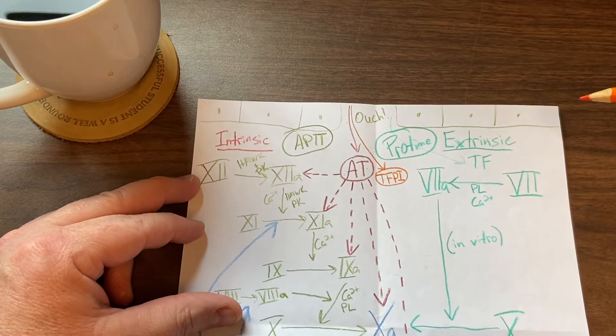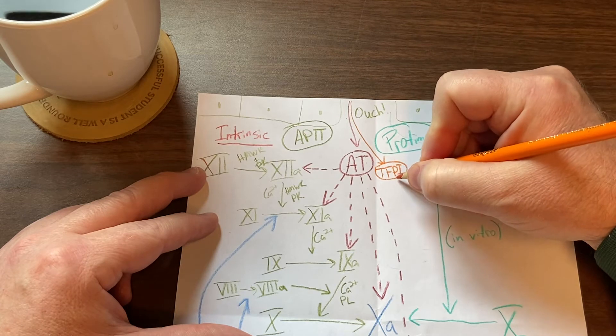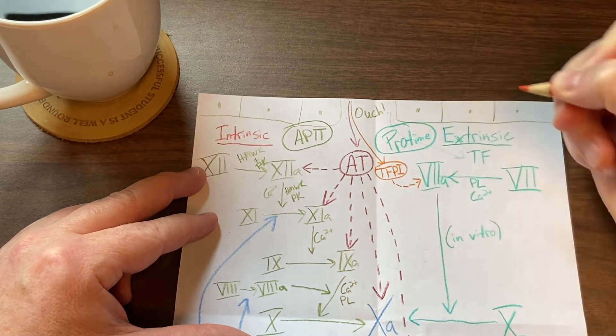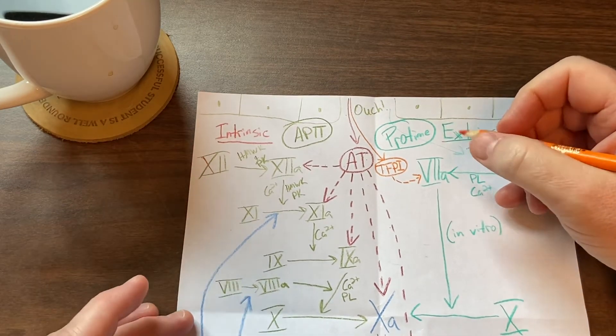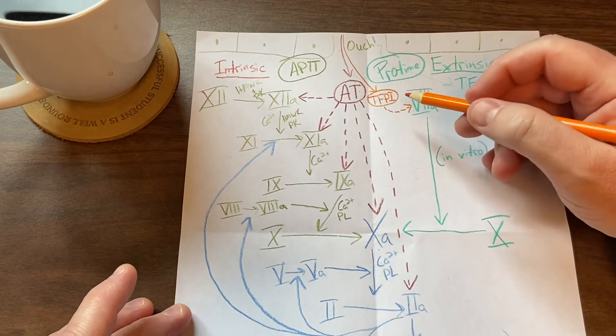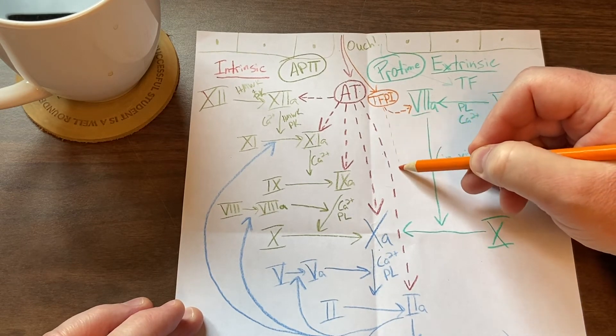Obviously it works against factor 7, so that's the big thing that it does. So it deactivates 7. It has a little bit of an effect, so I'm gonna draw a lighter line here. It also has a little bit of an effect on 10a, so I'm gonna draw a lighter line here to 10a.